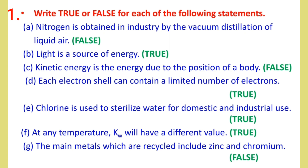D: Each electron shell can contain a limited number of electrons. Number E: Chlorine is used to sterilize water for domestic and industrial use.